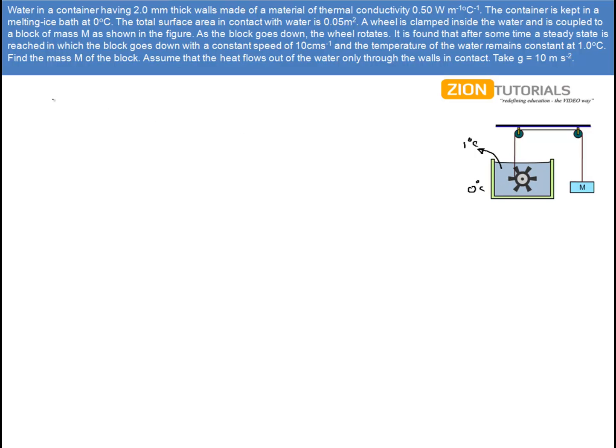So, let's say the rate of heat transference that is dQ/dt is given by KA delta T by L. Now dQ/dt over here is the rate of heat transference that is taking place from water to the ice bath. And where from this heat is coming?